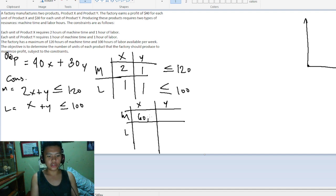To find the y value for machine time constraint, let x equal zero. We'll have y equals 120. So we have zero comma 120.